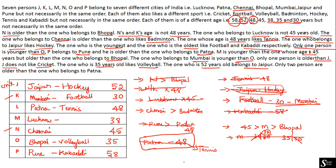Only two sports remain to be placed. The clue says Chennai person is older than the one who likes badminton. Chennai is N at 45 years. Badminton must belong to someone younger than 45 — the remaining sport slots are for M (38 years) and another person. So badminton is placed for M (38 years). The last remaining sport, cricket, is placed for the final person.